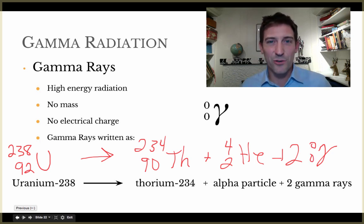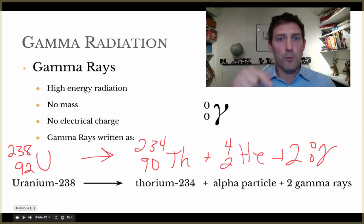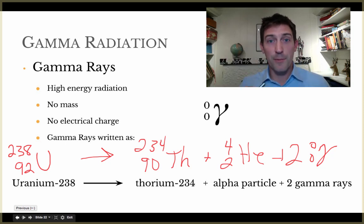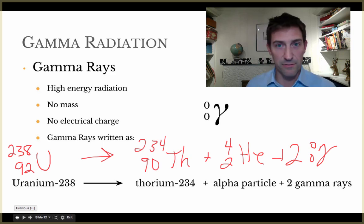Alpha particles not too harmful because they have trouble penetrating through much, but gamma rays can be potentially very harmful if you get any sort of dose out of those.